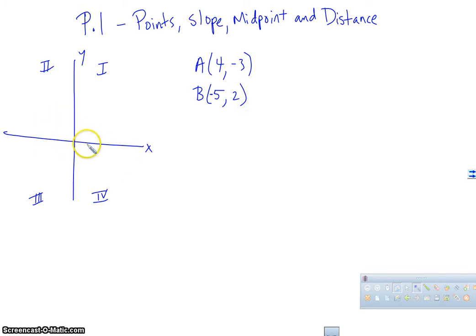So let's go ahead and plot those points. We're going to go 4, 1, 2, 3, 4 on the x, 1, 2, 3 on the y down. And that's going to be our point A. And then we're going to go B is going to go negative 5, 1, 2, 3, 4, 5, and up 2, 1, 2. And that is our point B.